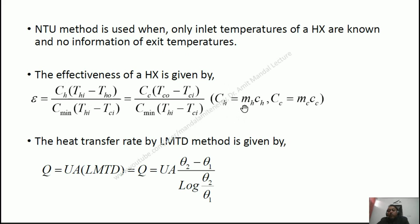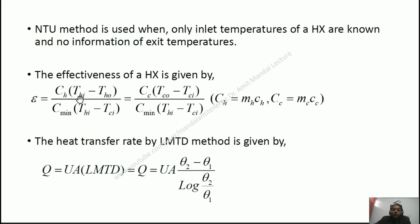Here C_H is the product of the mass flow rate of the hot fluid and the specific heat of the hot fluid. Similarly C_C is the product of the mass flow rate of the cold fluid and its specific heat. C_min is whichever of these two is smaller. T_HI is the temperature of the hot fluid at inlet, T_CI is the temperature of the cold fluid at inlet, T_HO is the exit temperature of the hot fluid, and T_CO is the exit temperature of the cold fluid.